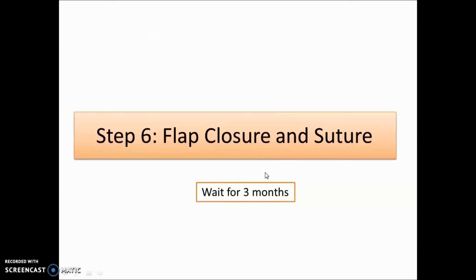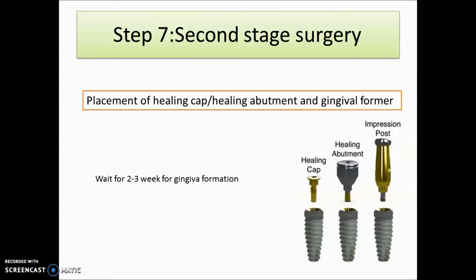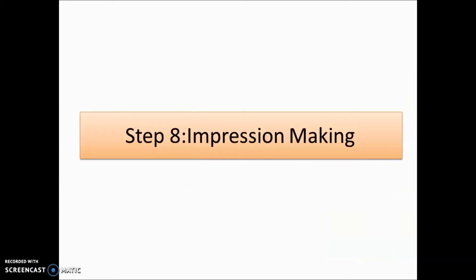After flap closure and suturing, for a two-stage surgery you wait three months. The second stage surgery involves placement of a healing cap, healing abutment, gingiva former, or impression post. After that, you wait 15 to 21 days — approximately two to three weeks — for gingival formation.